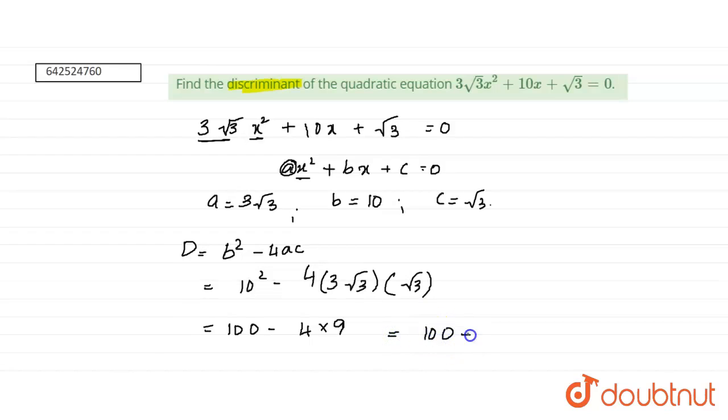We get 100 minus, 4 times 9 is 36. 100 minus 36 is 64.